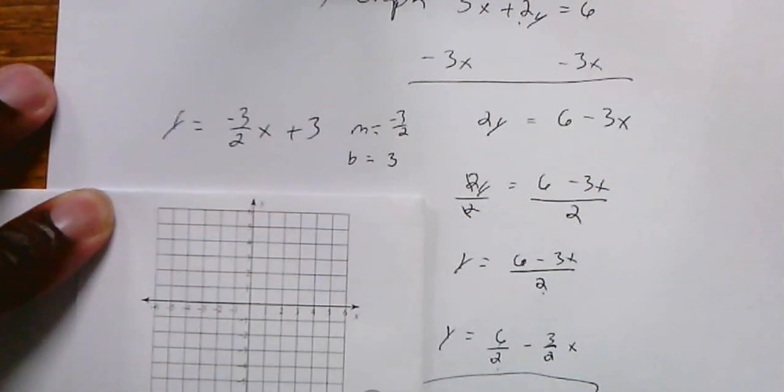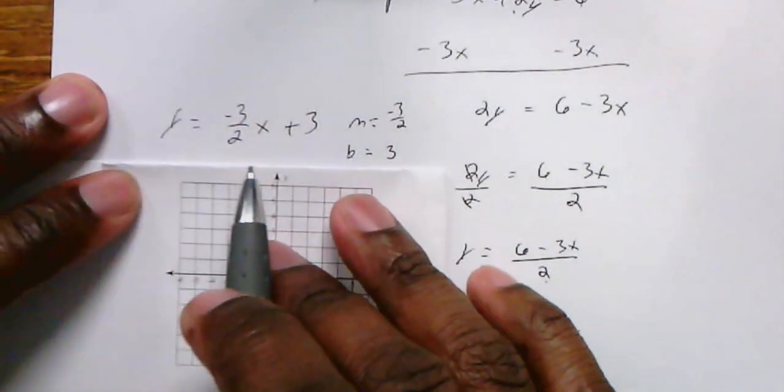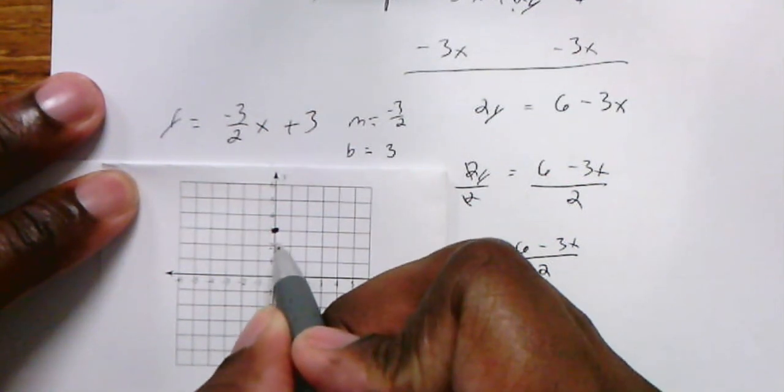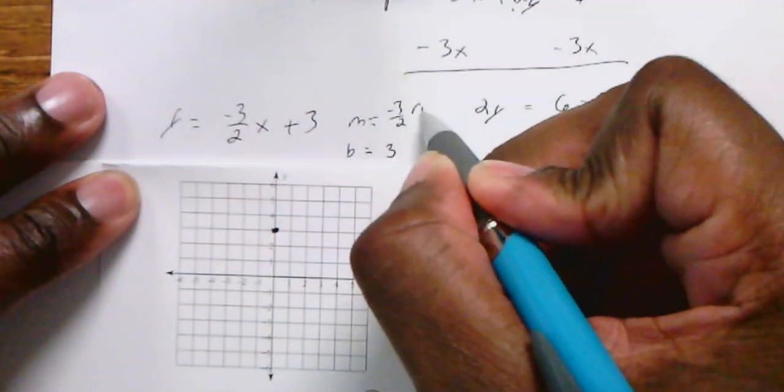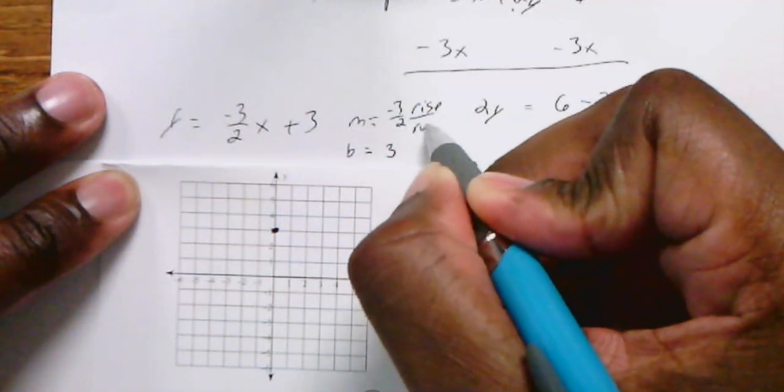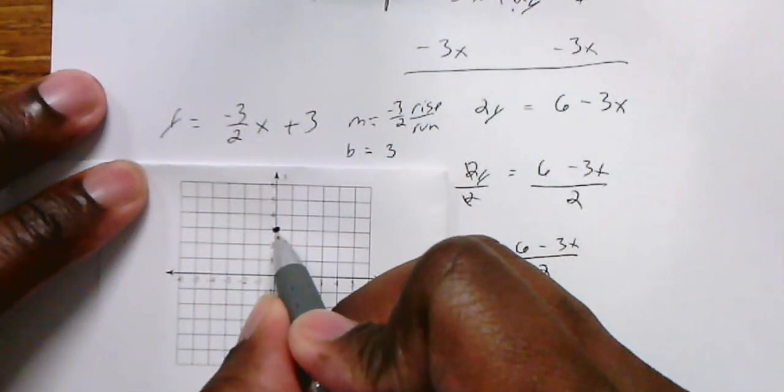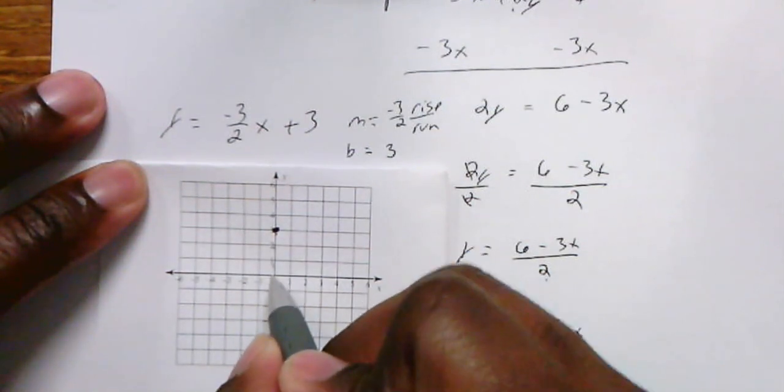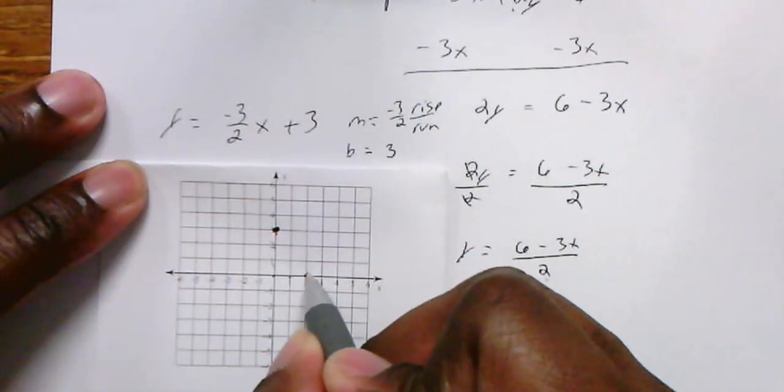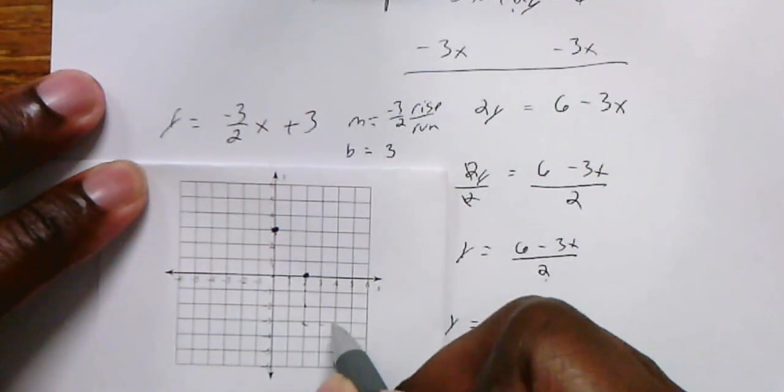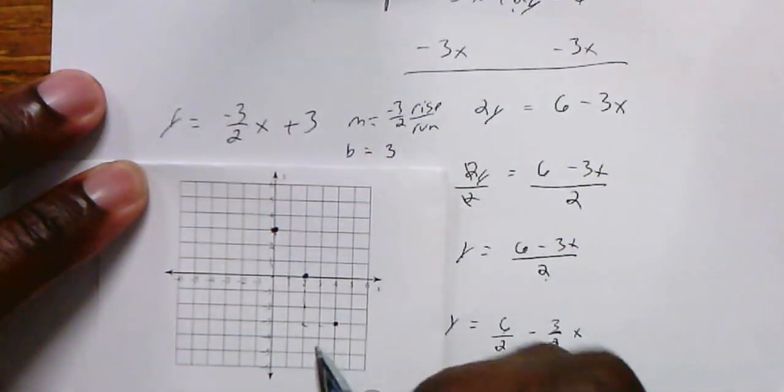My y-intercept is 3 and my slope is negative 3 over 2. When I plot it, I'm going to plot a point where y is 3, which is here. My slope is negative 3 over 2, so I'm going to rise negative 3 and run 2. Rise negative 3 means go down 3, so down 1, 2, 3, and run to the right 2. I can go down 1, 2, 3 and run to the right 2 again to keep finding points on this line.